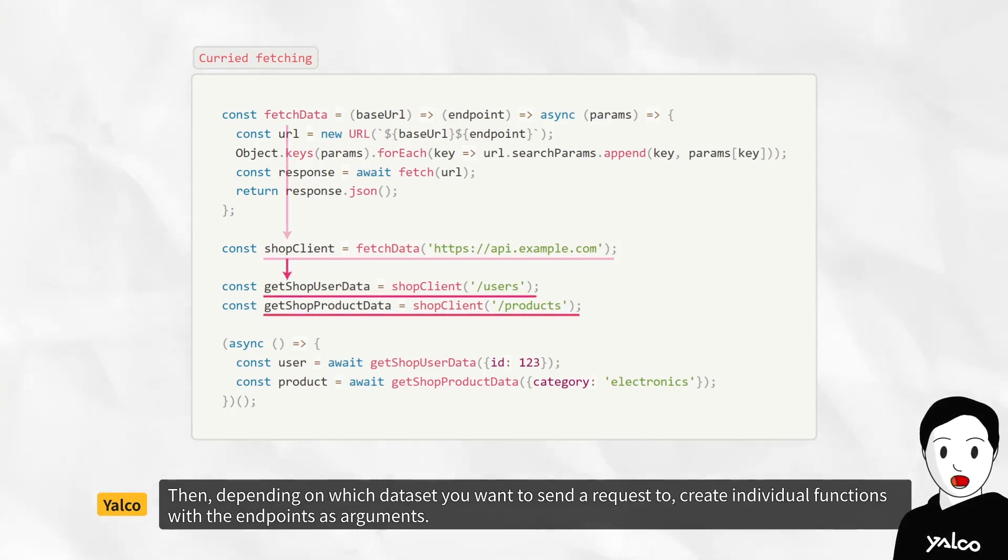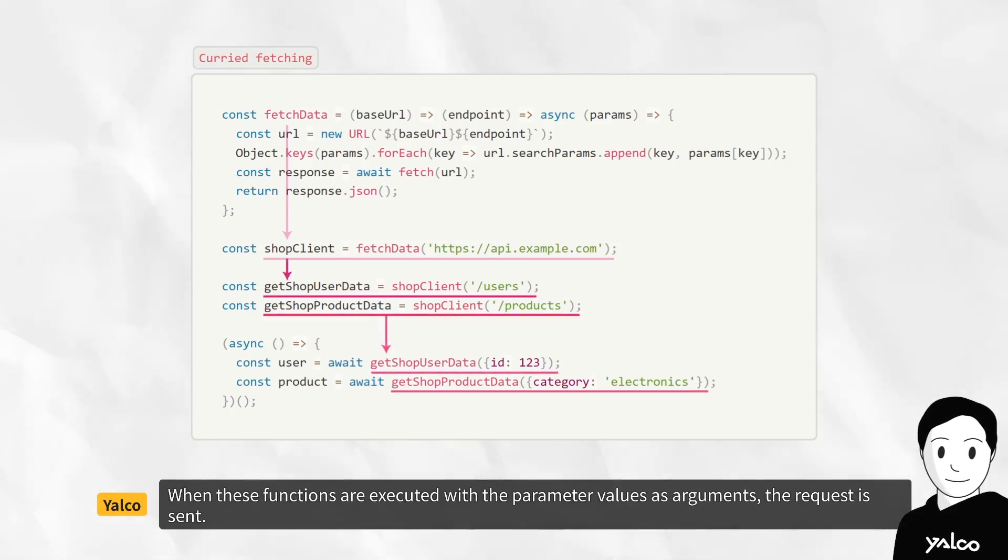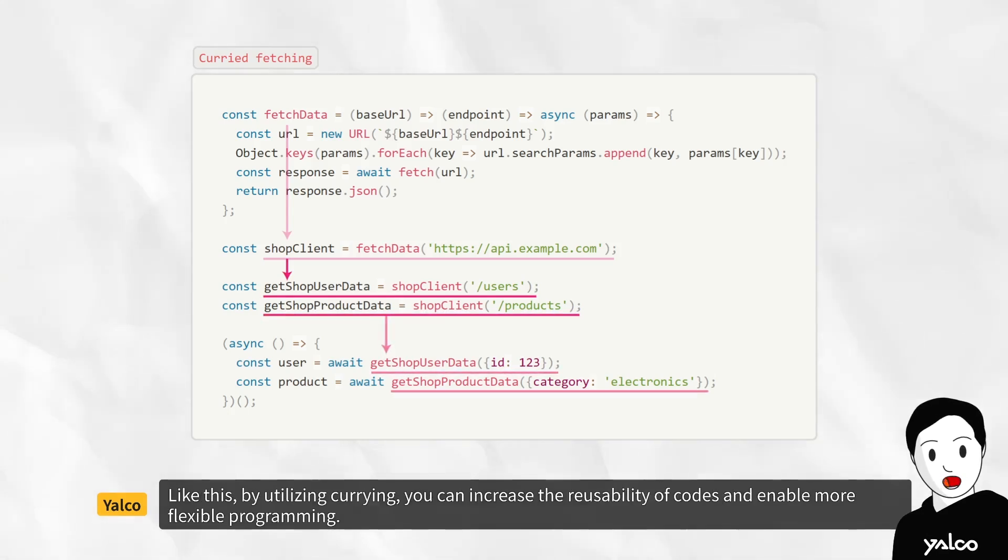Then, depending on which dataset you want to send a request to, create individual functions with the endpoints as arguments. When these functions are executed with the parameter values as arguments, the request is sent. Like this, by utilizing currying, you can increase the reusability of codes and enable more flexible programming.